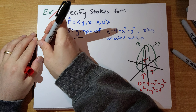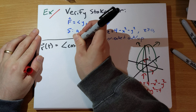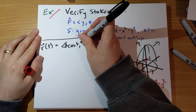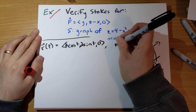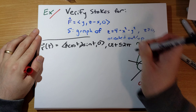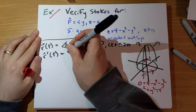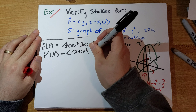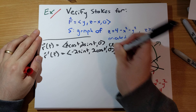So the boundary here, we can parametrize with R(t) = (2cos t, 2sin t, 0) for t between zero and 2π. R'(t) = (-2sin t, 2cos t, 0).